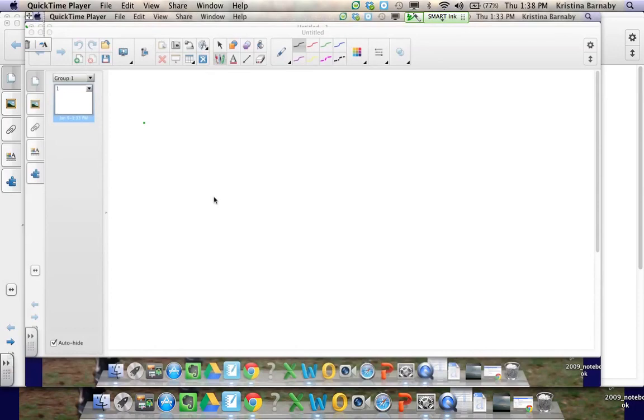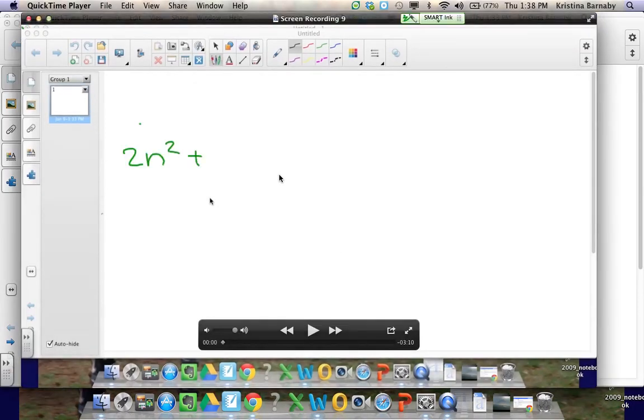Okay, let's take a look at another example. We have 2n squared plus 3n minus 9.